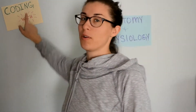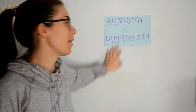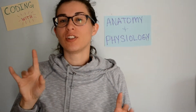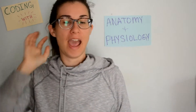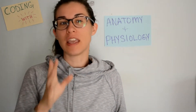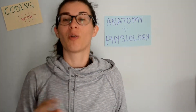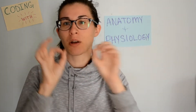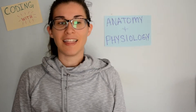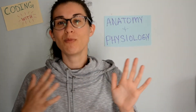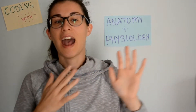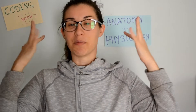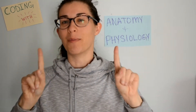Everyone, on this episode of Coding with Kate we are going to be talking about anatomy and physiology — specifically, we are going to cover the micro-anatomy, so essentially the cell or cells within our body. We won't go too in-depth, but we're going to be talking about certain components within the cell that will be a smooth transition to how other parts of the body work, specifically the heart and the brain.